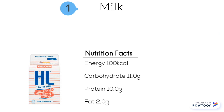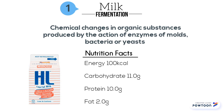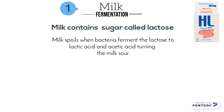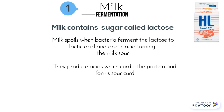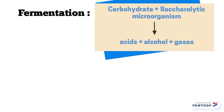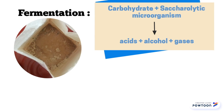The total carbohydrate is the highest in milk. Therefore, the common food decay of milk is fermentation. Fermentation is the chemical changes in organic substances produced by the action of enzymes of moulds, bacteria or yeast. Milk contains a sugar called lactose. Milk spoils when bacteria ferment the lactose to lactic acid and acetic acid, turning the milk sour. They produce acids which curdle the protein and form sour curd — this is bad fermentation. In this formula, saccharolytic microorganisms ferment carbohydrates to produce acids, alcohol and gases.